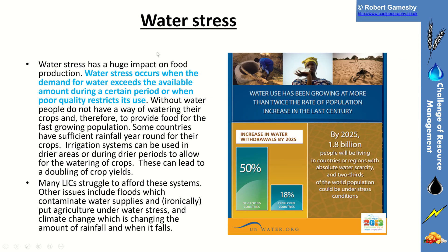Another factor is water stress. All plants need water, and animals can require quite a lot of water too. If there's water stress in an area — when the demand for water exceeds the available amount — we can suffer a reduction in the amount of crop or animal produced. We can adjust to that by trapping water behind dams, using irrigation systems, or using groundwater pumps. But that will be variable between areas. According to the United Nations Water Organisation, 1.8 billion people will be living in countries or regions with absolute water scarcity by 2025.